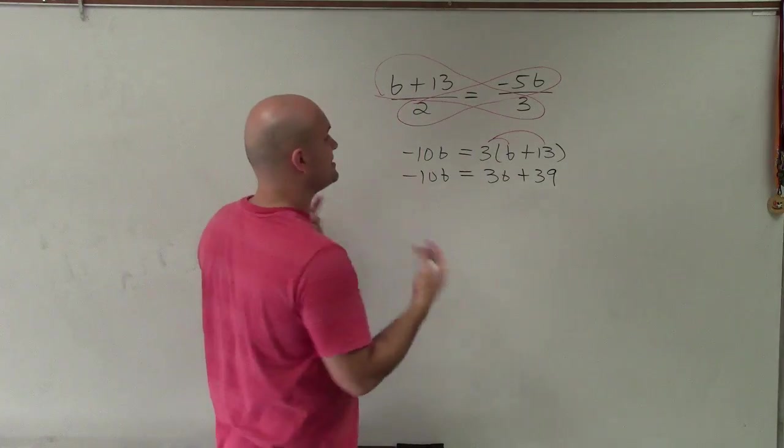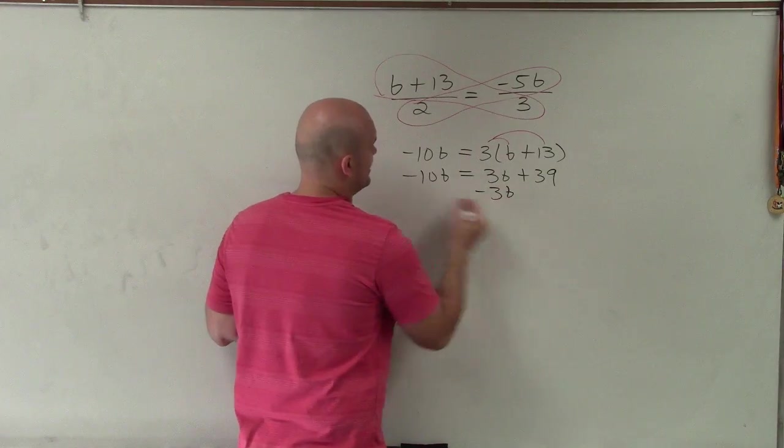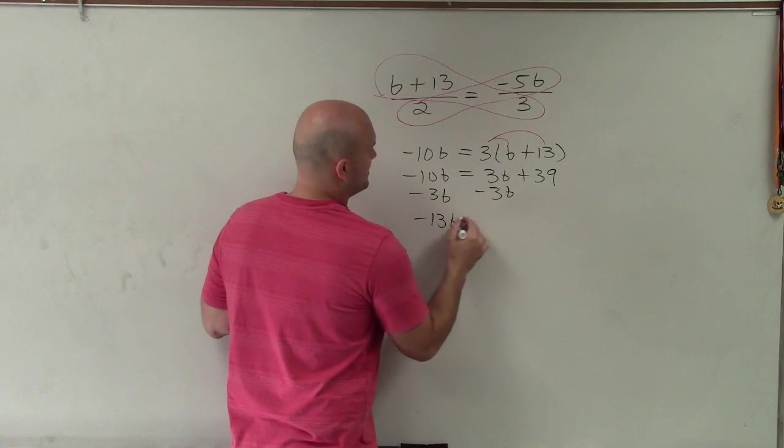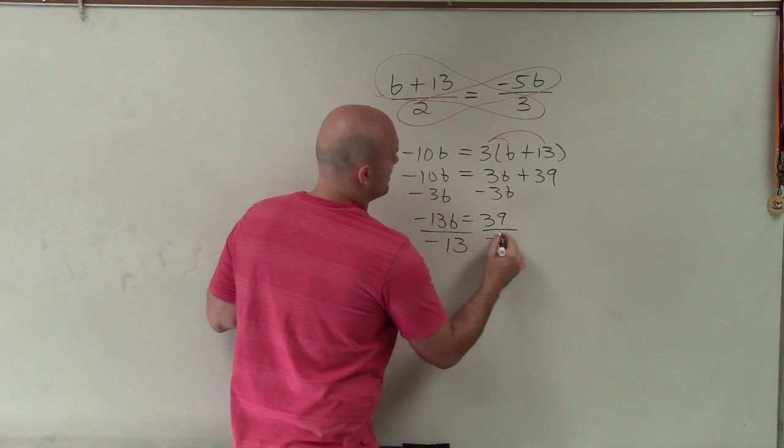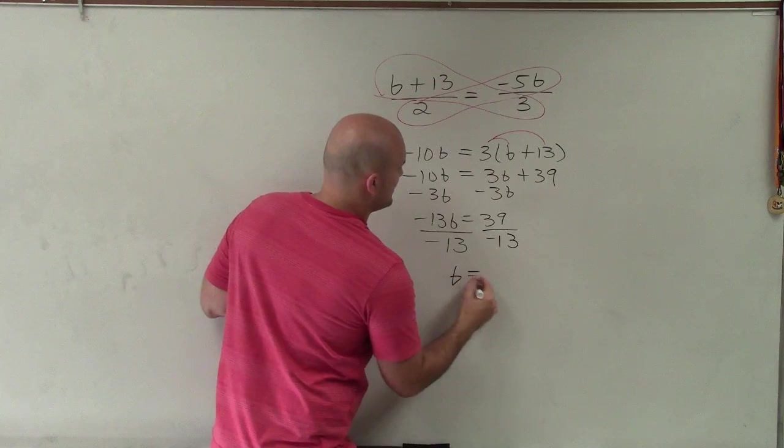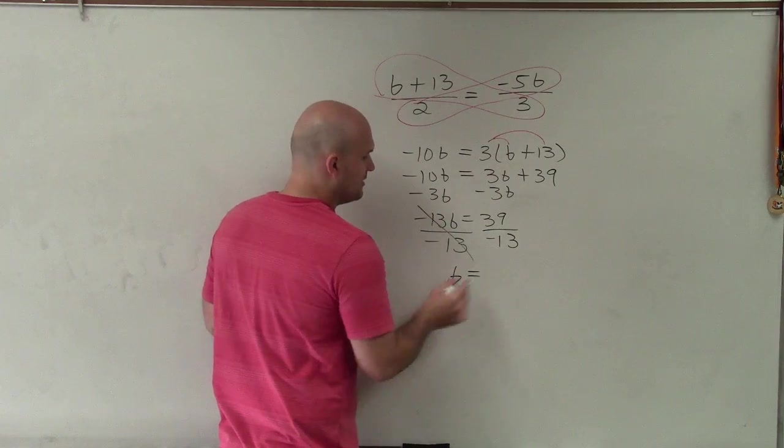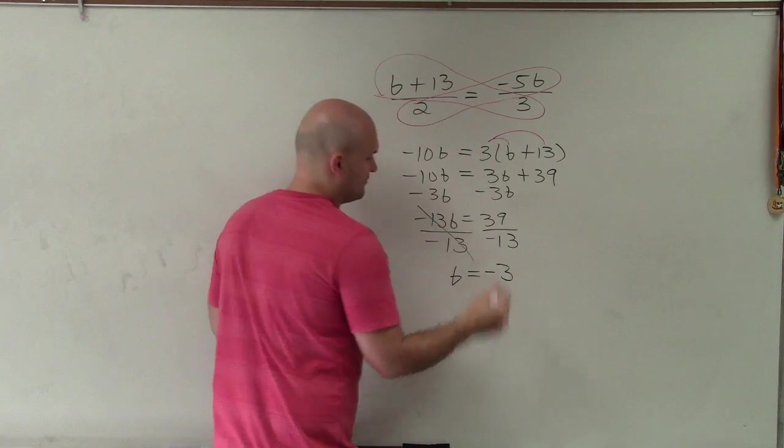Now I need to get the b's to the same side. So I'll subtract the 3b, and I get negative 13b equals 39. Divide by negative 13. b, that goes to 1. b now equals negative 3.